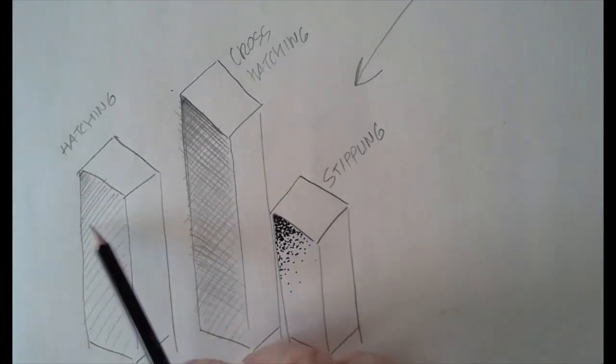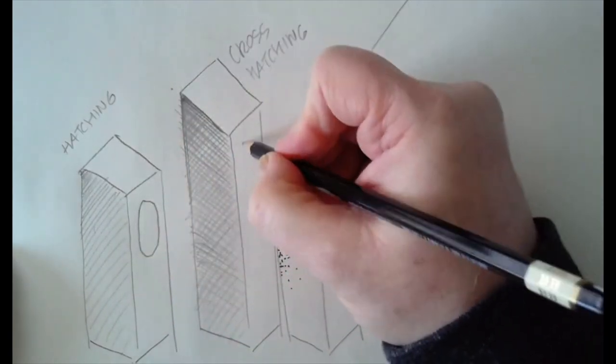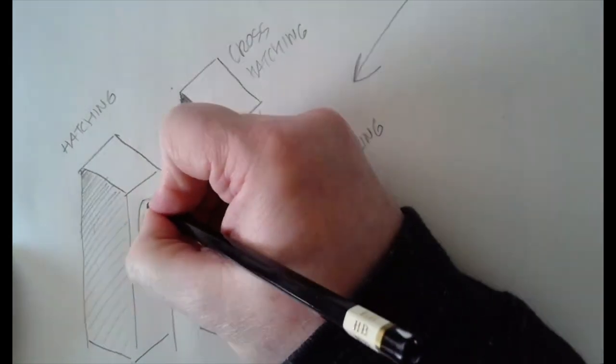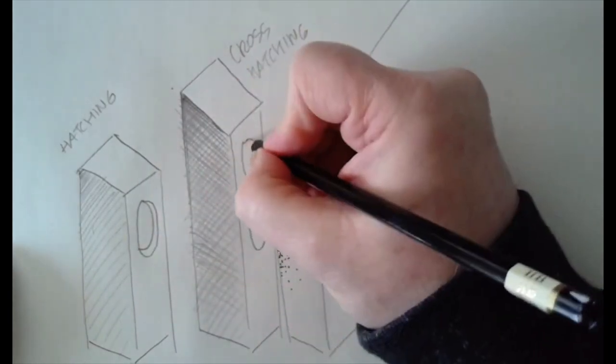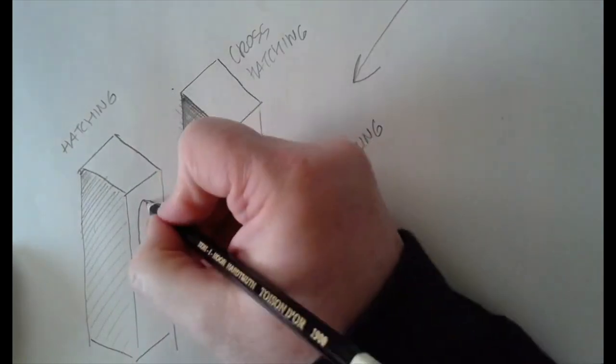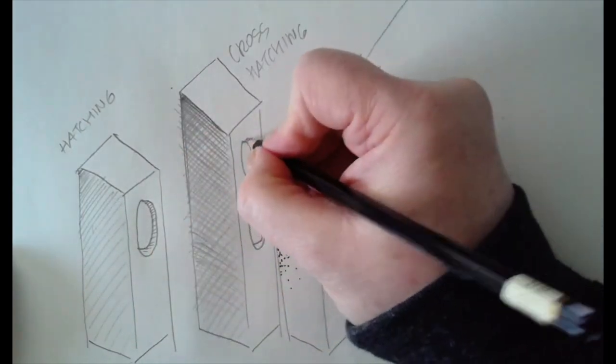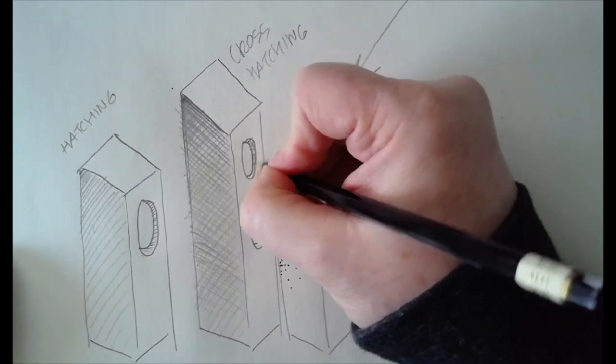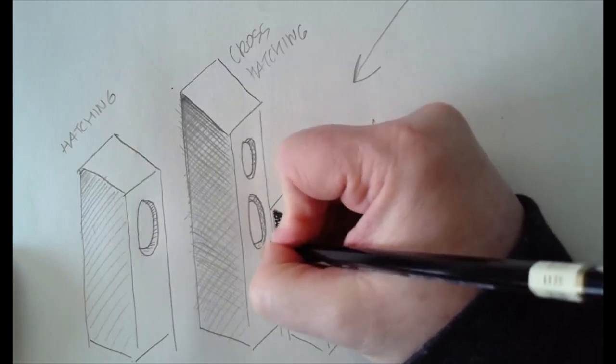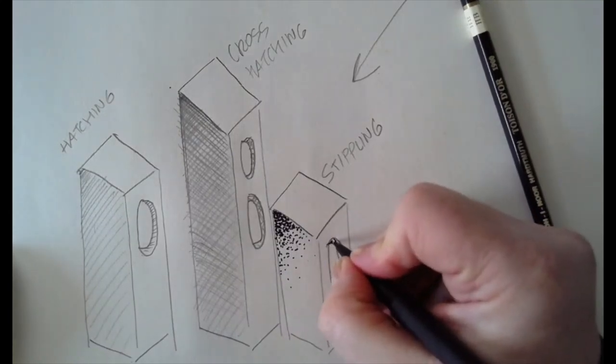All right. So those are three different techniques. And I can come in here now and I can add maybe some circles or some ovals just for fun. And on this side, I'm going to add another line on that one side because that's where I want the shadow to show from. Hatching. Crosshatching. And we switch. Stippling.